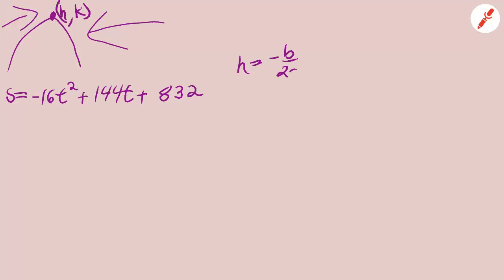So here we're going to work it. s equals negative 16t squared plus 144t plus 832. And this is the parabola formed by the graph, and there is the vertex, the highest point. We have to find h first which is the time it takes the rocket to get to k and k is the maximum height.